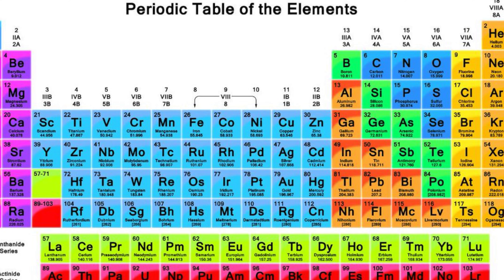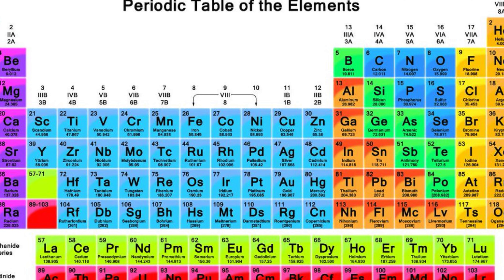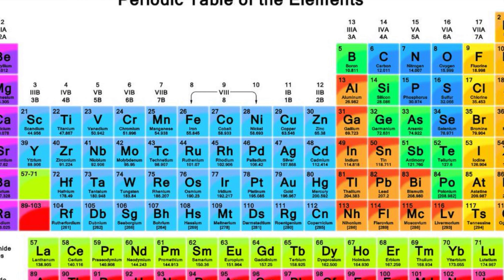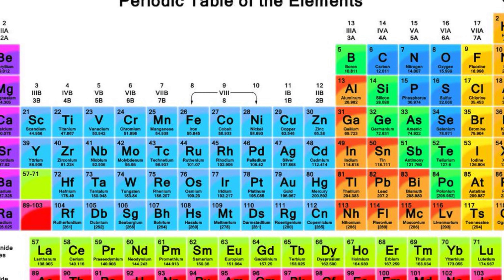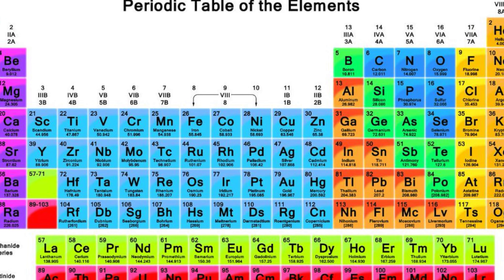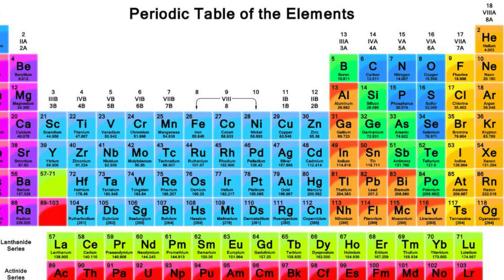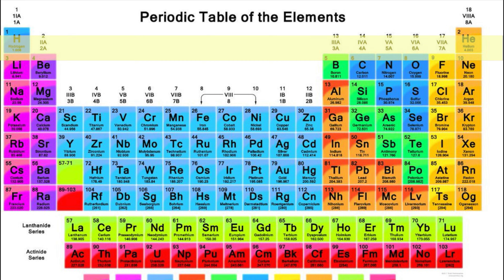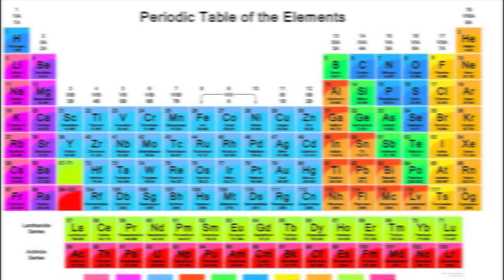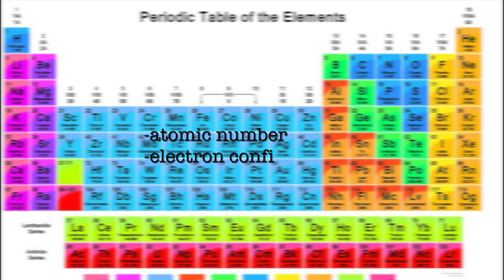What is the periodic table? The periodic table is an arrangement of the chemical elements in a table format. The table is arranged into 18 groups and 7 periods. The elements are arranged based on their atomic number, electron configurations, and chemical properties.